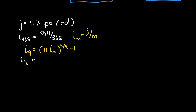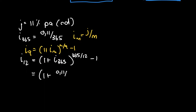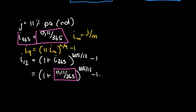Substituting in: 1 plus 0.11 divided by 365, all to the power of 365 over 12, minus 1. Putting this into our calculator gives 0.00920 et cetera. We don't round off now — remember, we only round off at the very end. Our next step is to take this I12 and write it as a nominal interest rate per annum compounded monthly.